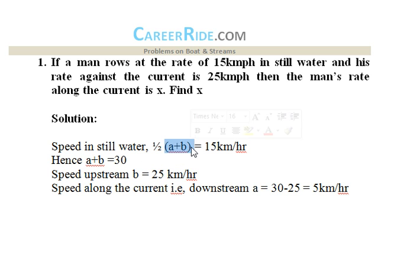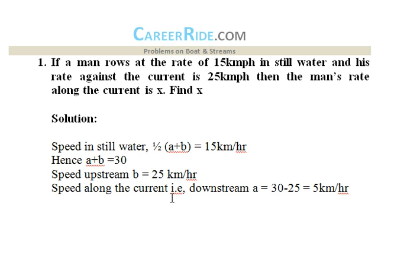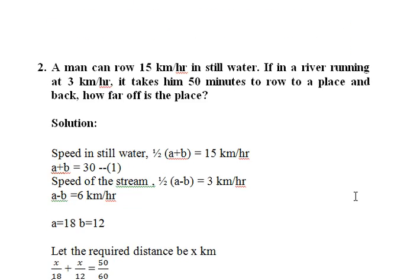From the formula we get a + b = 2 × 15 = 30. Speed upstream b is given as 25 kilometers per hour. Since b and a + b are known, we can calculate speed downstream: a = 30 − 25 = 5 kilometers per hour. This is a very easy question but frequently asked in various examinations. The formula is the key to solving questions in this topic.